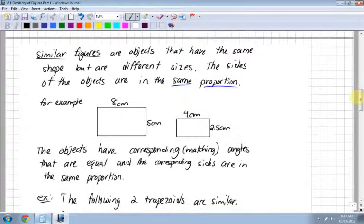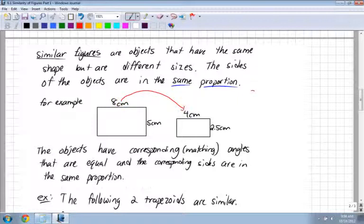Now let's go over some definitions. Similar figures are objects that have the same shape but are different sizes. One could be bigger and one could be smaller. Notice these are both rectangles. The sides of the objects are in the same proportion. For example, if I look at this side which is 8, and the similar side which is 4, 8 divided by 4 equals 2.